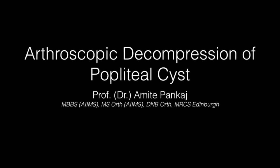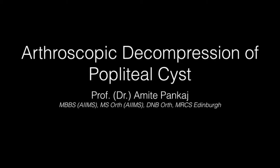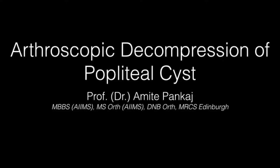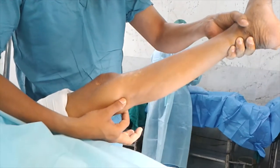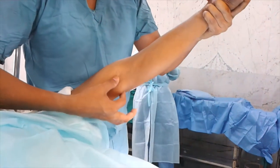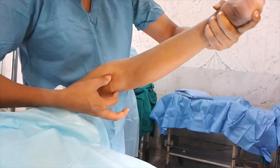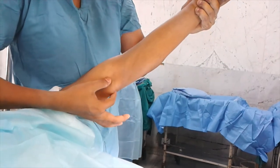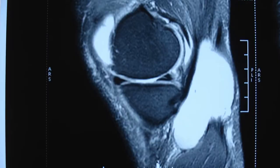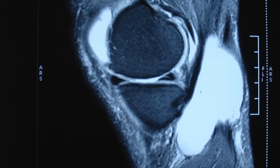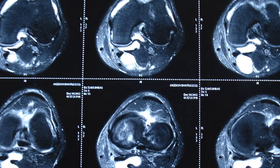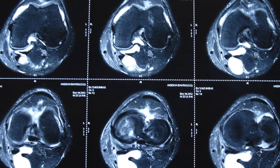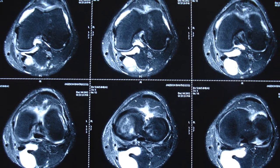In this video, we are going to demonstrate the arthroscopic decompression of popliteal cysts. Here is a 50-year-old lady with osteoarthritis of the left knee and a large Baker cyst in the popliteal fossa. There is a horizontal tear of the medial meniscus. The communication between the capsule and the popliteal cyst is quite visible on axial sections.